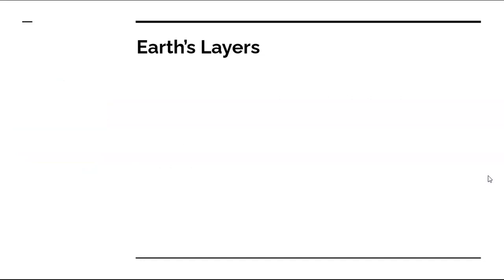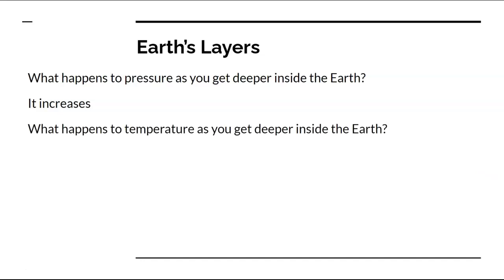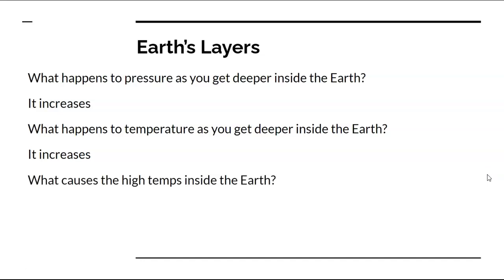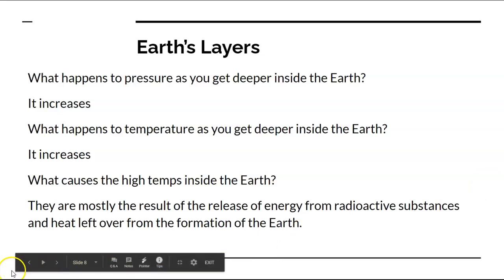This is the last slide for the first half of these notes: Earth's layers. What happens to pressure as you get deeper inside the Earth? It increases. What happens to temperature as you get deeper inside the Earth? It also increases. And what causes the high temperatures inside the Earth? They are mostly the result of the release of energy from radioactive substances and heat left over from the formation of the Earth. That is the first half of Topic 3 Lesson 1, Earth's Interior — we will finish these up tomorrow.